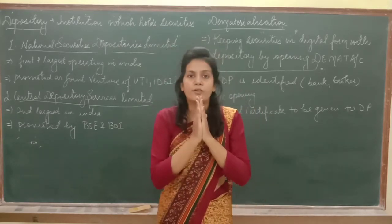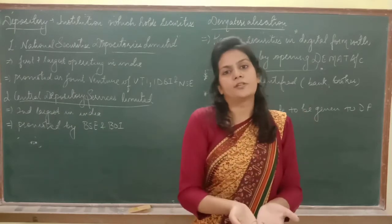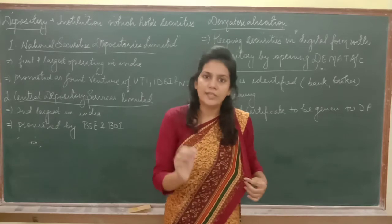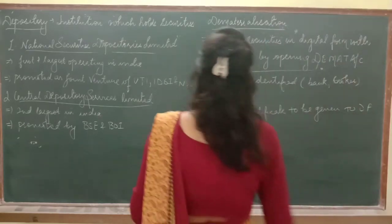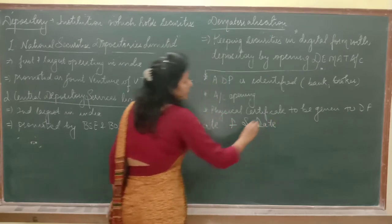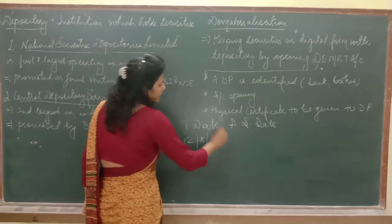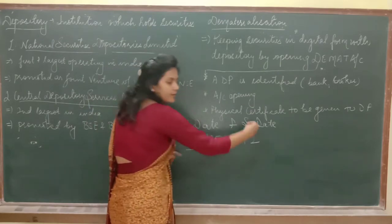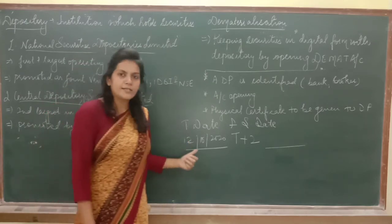The transaction date and the settlement date are different. The transaction date is the date on which we sold the shares, but it takes at least two to three days to process the transaction. Here 'T' stands for the transaction date. For example, if today is Monday and I sold shares on Monday, and the settlement timing is T+2, then settlement happens two days after the transaction date — on Wednesday.